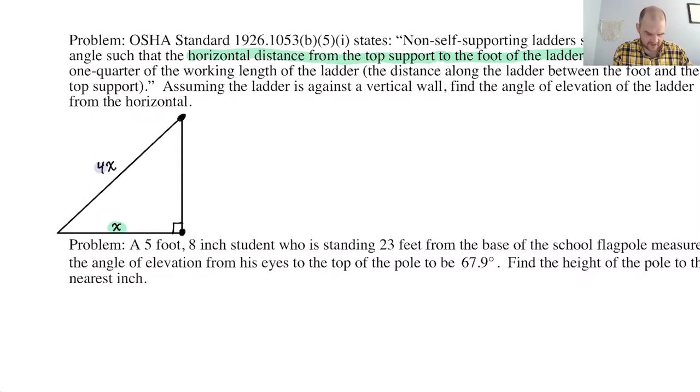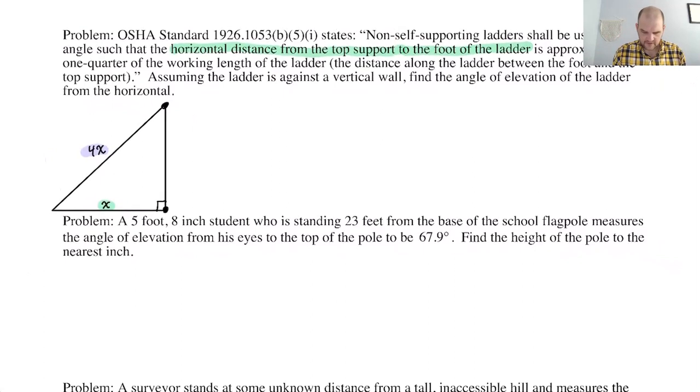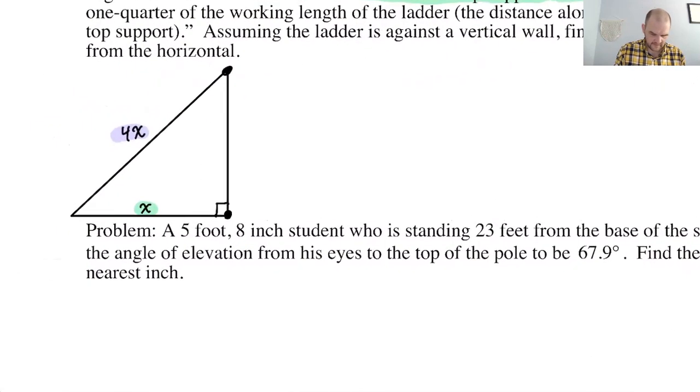So let's see if that makes sense. If the ladder was 20 feet long, then at most x could be one fourth of that. So five. So I think it works. The distance along the ladder between the foot and the top. Okay, so it's explaining the working length. Assume the ladder is against a vertical wall, find the angle of elevation of the ladder from the horizontal. So we are looking for this. We're looking for that angle.